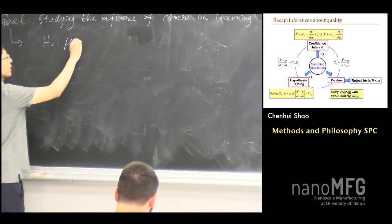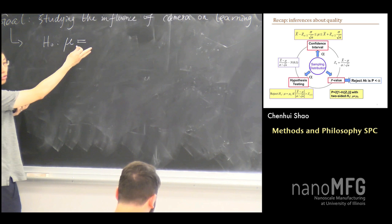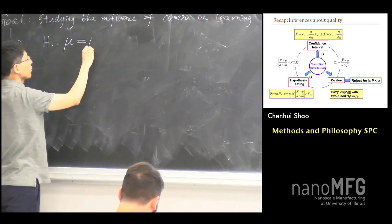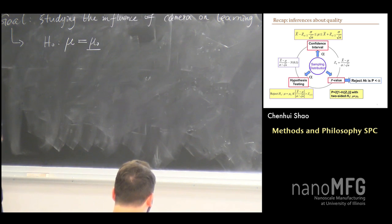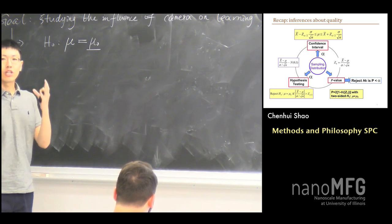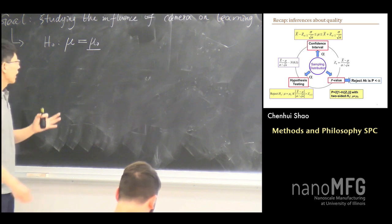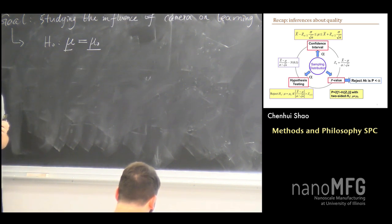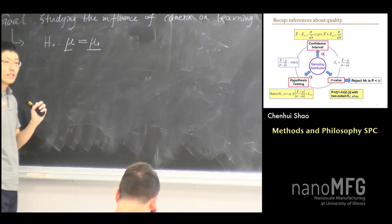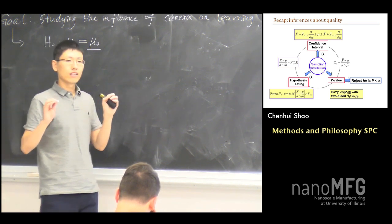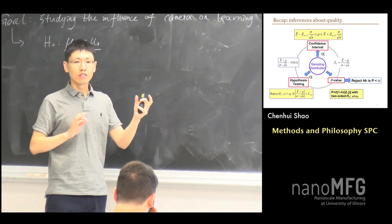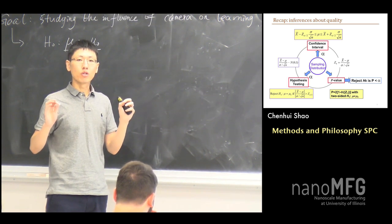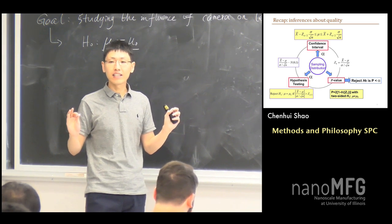Basically, when you test whether mu is equal to some number, let's say we use mu-zero. We denote mu-zero as the average student performance when the camera is not present. This is our variable of interest. We want to test whether these two numbers are equal. At this point, we do not know whether we are expecting better or worse performance, so it may be more reasonable to use a two-sided test.